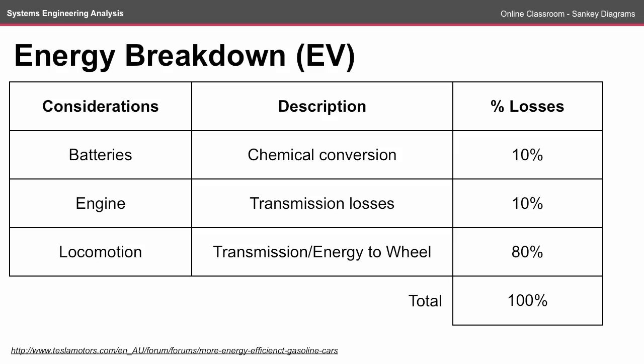By contrast, an electric vehicle is far more efficient with only very minor reported losses in conversion, meaning that upwards of 80% of energy is converted to energy to wheel.